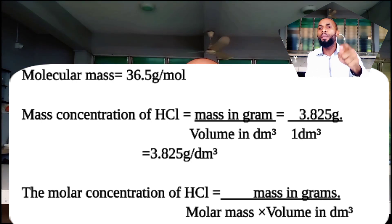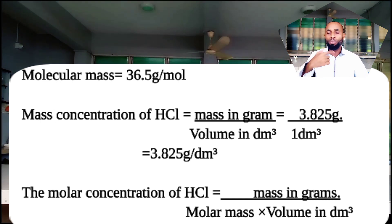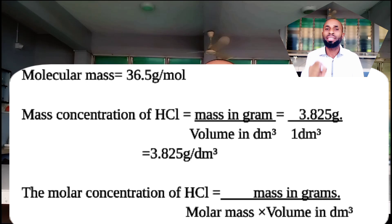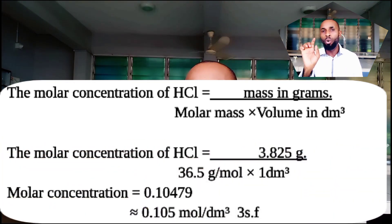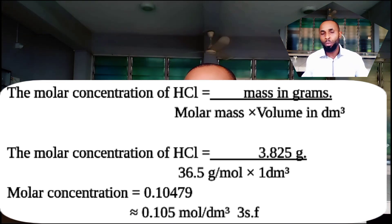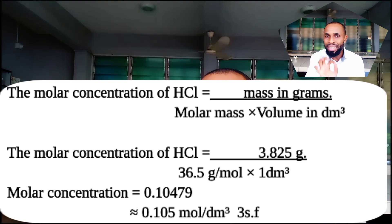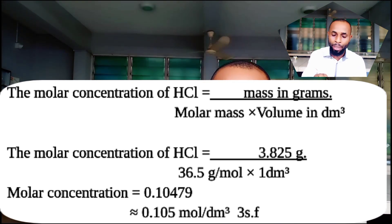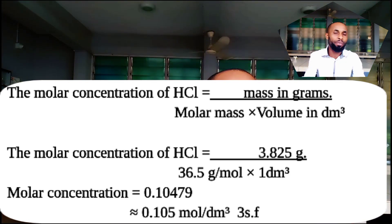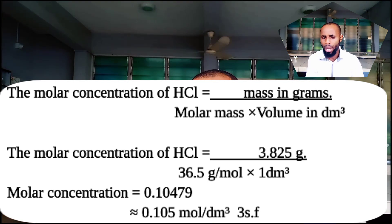Now we calculate the molar concentration in mol/dm³. The molar mass of HCl is 1 + 35.5 = 36.5g/mol. Molar concentration equals mass in grams over molar mass times volume in dm³. So: 3.825 over 36.5 times 1dm³ = 0.10479 mol/dm³. Approximated to 3 significant figures, that is 0.105 mol/dm³, as recommended.